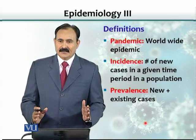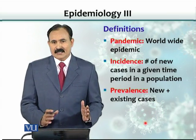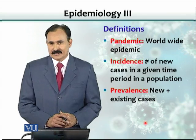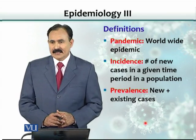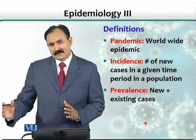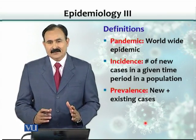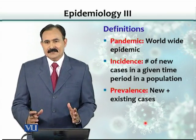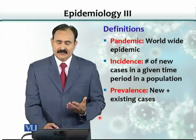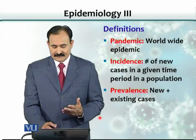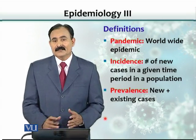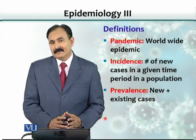Prevalence includes both old cases plus new ones. In the same period if we encounter 15% cases of flu, and at the previous time point there were already 20%, then 20% plus 15% would be the prevalence for that period.